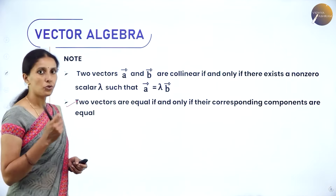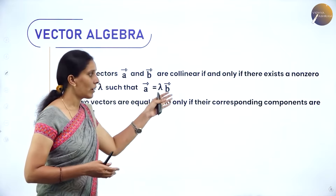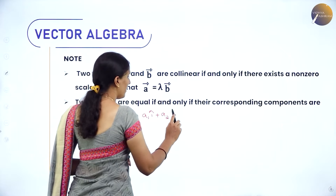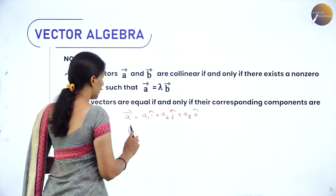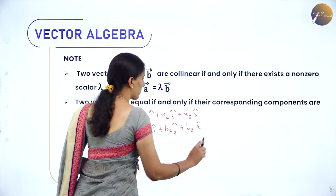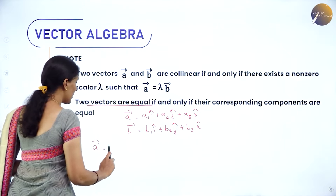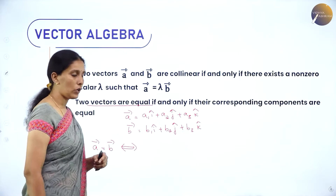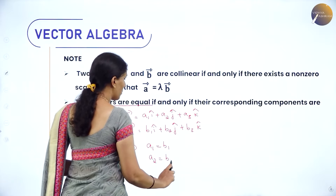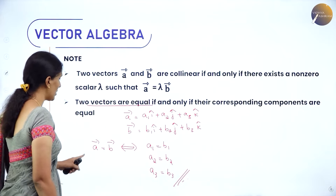Two vectors are equal if they have the same magnitude and direction. So two vectors are equal if and only if their corresponding components are equal. Vector A = vector B if and only if A1 = B1, A2 = B2, and A3 = B3. Only when all these conditions are satisfied can we say vector A equals vector B.